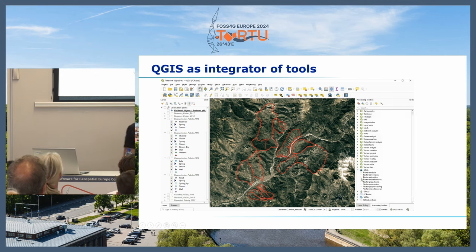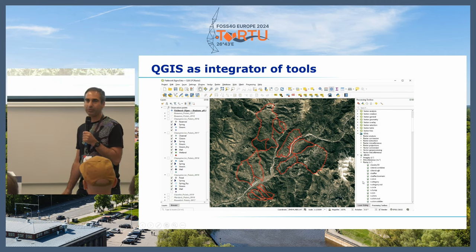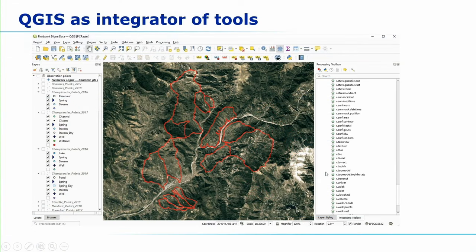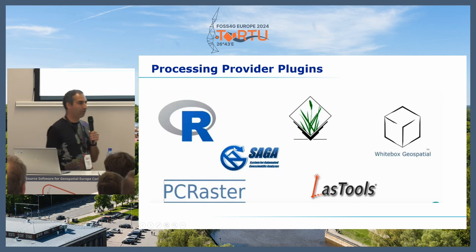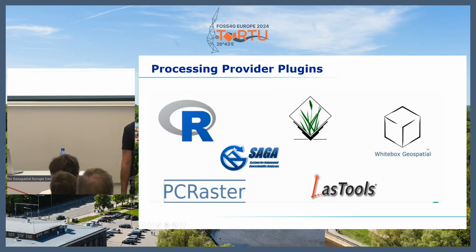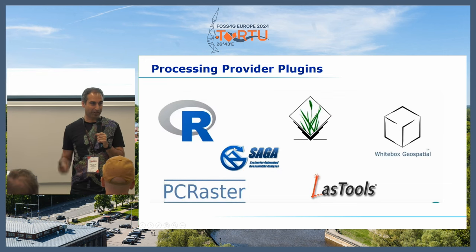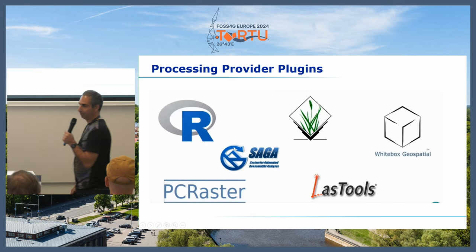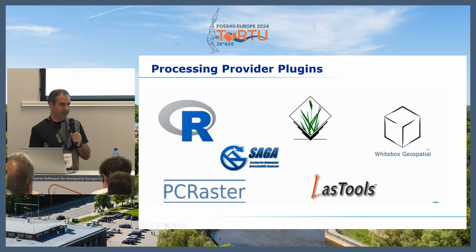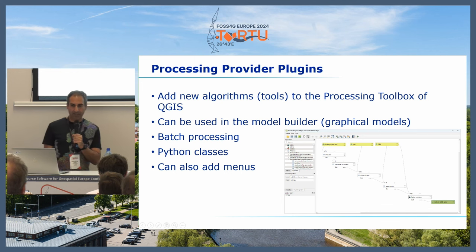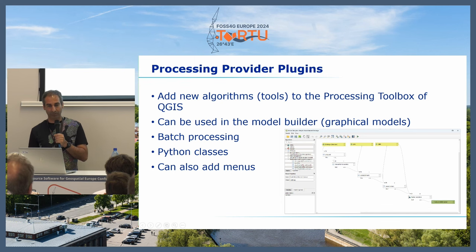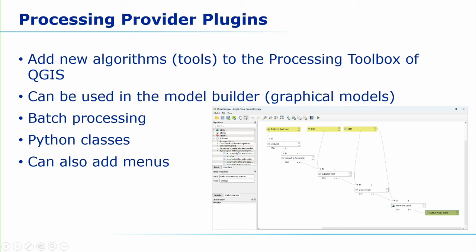The nice thing about QGIS is that it's an integrator of tools. It comes with core applications, but for hydrology we mostly have to rely on plugins — specifically processing provider plugins. These are tools that are also standalone tools you can use for analysis in Python or in their own environment. Because QGIS is a nice integrator, these processing provider plugins can add algorithms from third-party software to the processing toolbox, integrated in the QGIS Python framework. You can use the model builder for graphical models and workflows, do batch processing, and they come as Python classes.